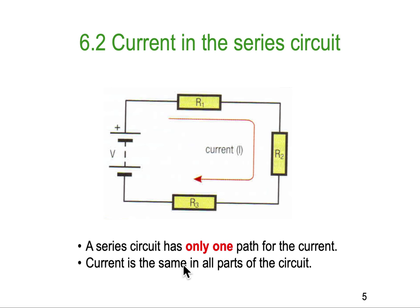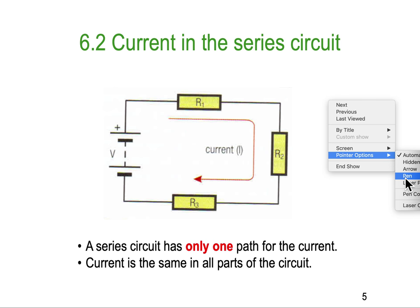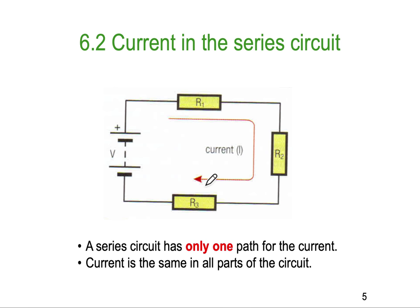So, the big thing that I need you to get a hold of in this particular video clip is current in a series circuit. In a series circuit, current only has one path. There's only one possible path, and you can see here, it's represented by our nice red arrow here, and remember we're using conventional current flow, so the current's flowing from the positive to the negative on the outside of the battery.